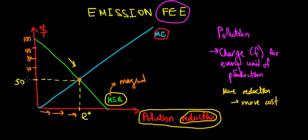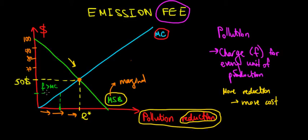Let's call the optimal level $50. What does it mean? On this range, our fee of $50 is greater than the marginal cost of reducing the pollution. So on this range, the fee we are charging of $50 is greater than the marginal cost of pollution. For example, let's say the marginal cost of reducing this amount of pollution equals $25. The fee is $50. Why are we still reducing pollution on this range until point E?